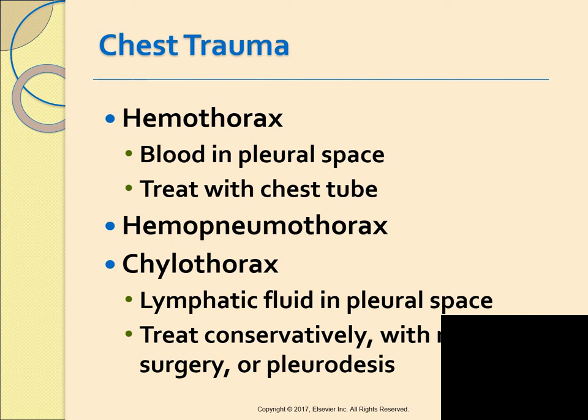A hemothorax is an accumulation of blood in the pleural space resulting from injury to the chest wall or diaphragm. A traumatic hemothorax requires immediate chest tube insertion to evacuate the blood. If a hemothorax occurs along with a pneumothorax, it's called a hemopneumothorax.